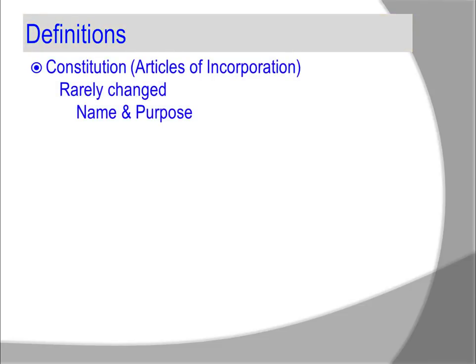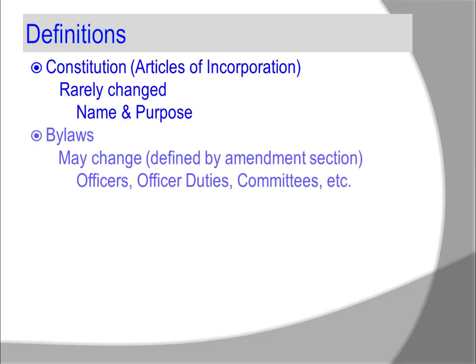What are some definitions? A constitution is usually articles of incorporation filed with the state. A constitution is rarely changed. It is often comprised of only a name and a purpose for the organization. Bylaws often contain officers, officer duties, and committees. These types of positions may change over time. Changing the bylaws is often defined by the amendment section in the bylaws.